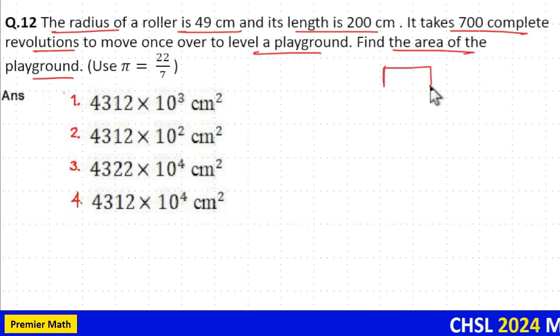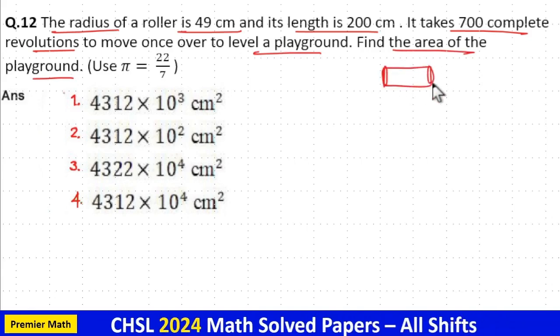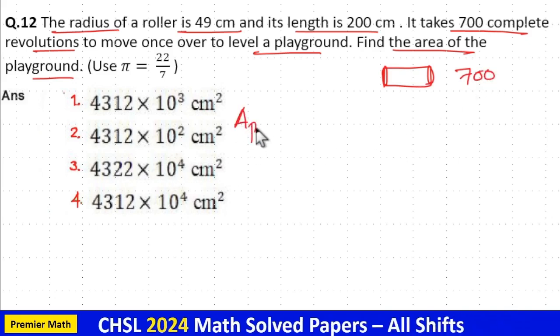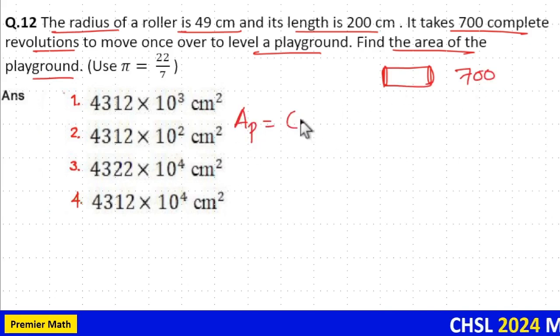Here, the roller means this cylindrical portion runs over the playground 700 times. Now, the area of the playground is equal to the curved surface area of the roller times the total number of revolutions.